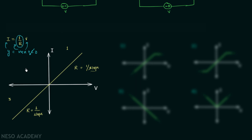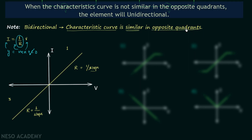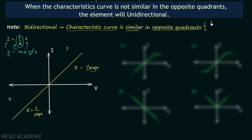Therefore, for bidirectional elements the characteristic curve is similar in opposite quadrants — meaning quadrant 1 and quadrant 3, or quadrant 2 and quadrant 4.